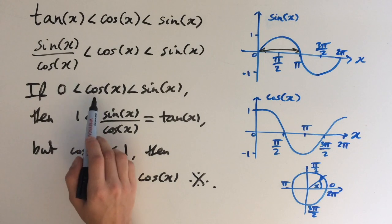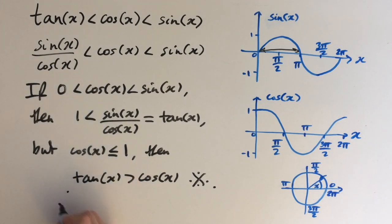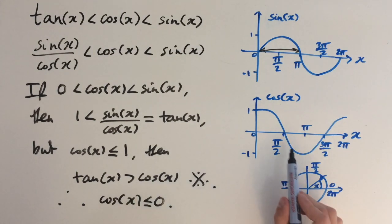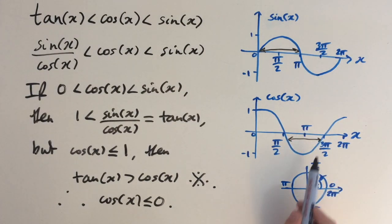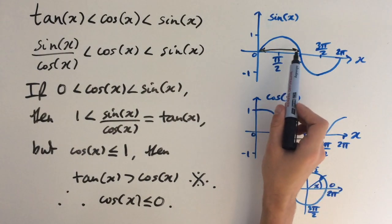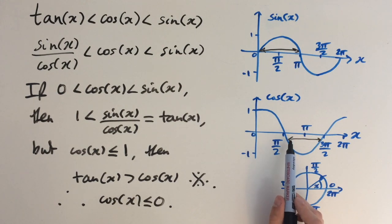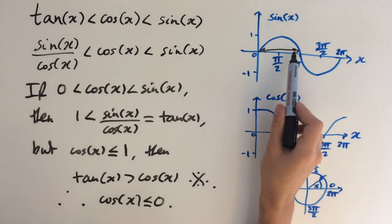That means cos(x) must be negative. Therefore cos(x) ≤ 0. Looking at the graph of cos(x), it's less than or equal to zero only when x is between π/2 and 3π/2. If we combine this with our earlier condition, the only allowable values of x are between π/2 and π.